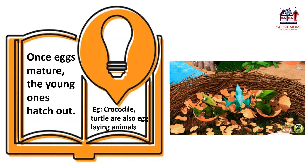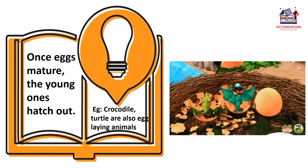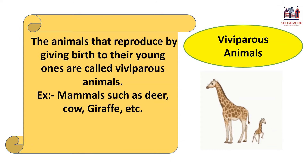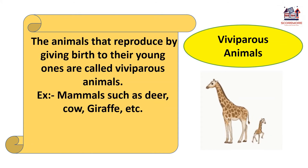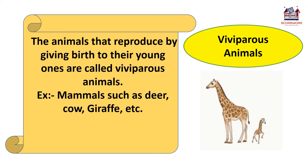For example, crocodiles and turtles are also egg-laying animals. The animals that reproduce by giving birth to their young ones are called viviparous animals. For example, mammals such as deer, cow, giraffe, etc.